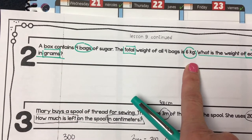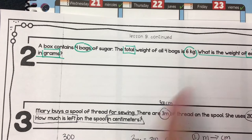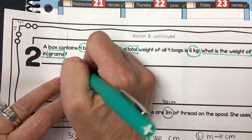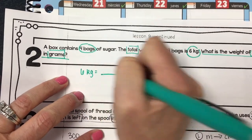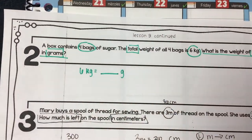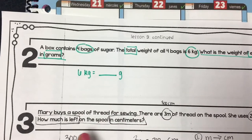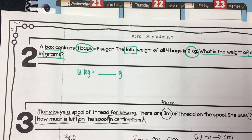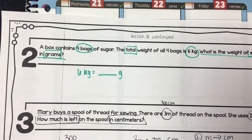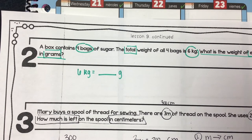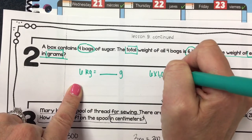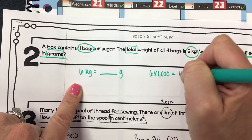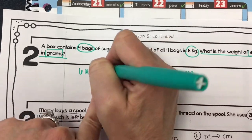So six kilograms is how many grams? That's what you have to do first. Think big to small — horse to fly. The conversion: there are one thousand grams in a kilogram, so six times one thousand gives us six thousand total grams.